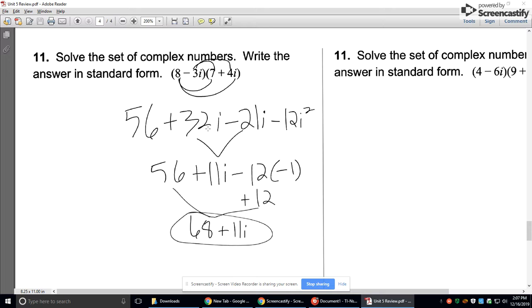Your two i's in the middle will combine for 11i. i squared always turns into a negative 1 by definition. So negative 12 times negative 1 is positive 12. So I just combine that with the 56 for 68. And then I just bring down the plus 11i. When it says write it in the standard form, that's what it means. Normal number first, imaginary number second. And that's it.